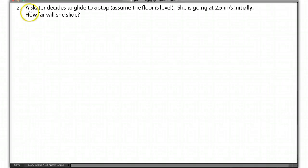Okay, question number two on the friction worksheet. A skater decides to glide to a stop, assume the floor is level. She is going at 2.5 meters per second initially, and how far will she slide?